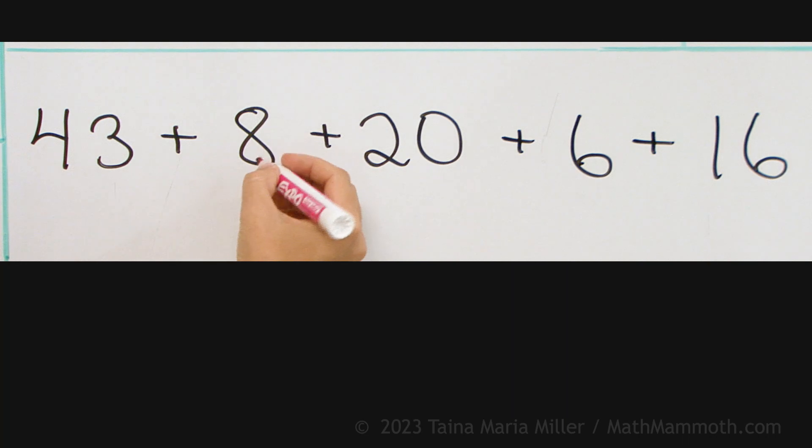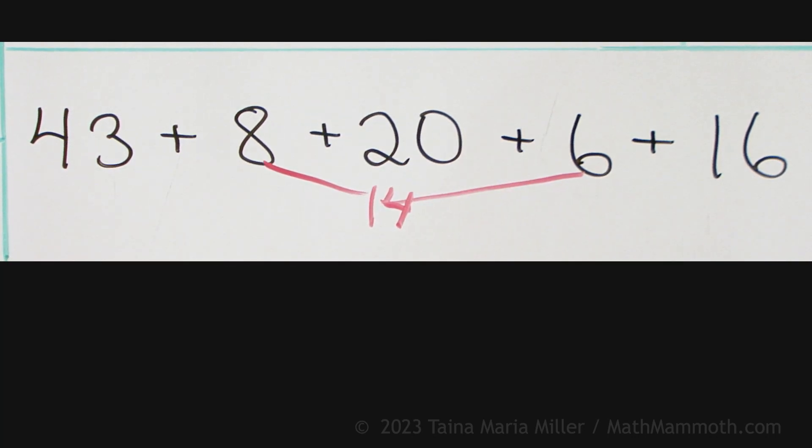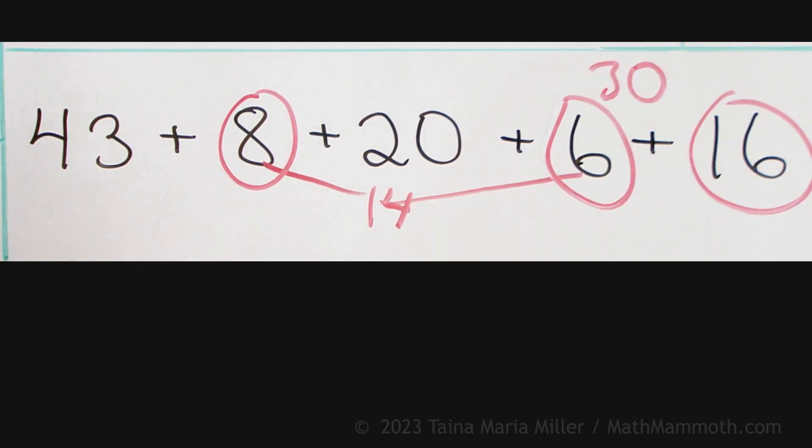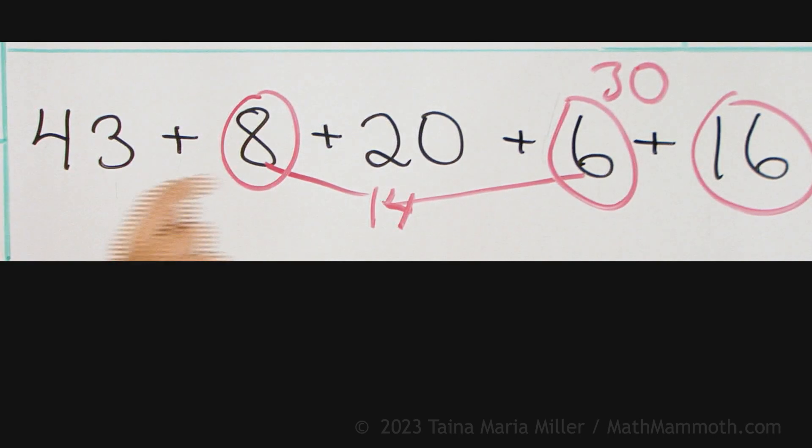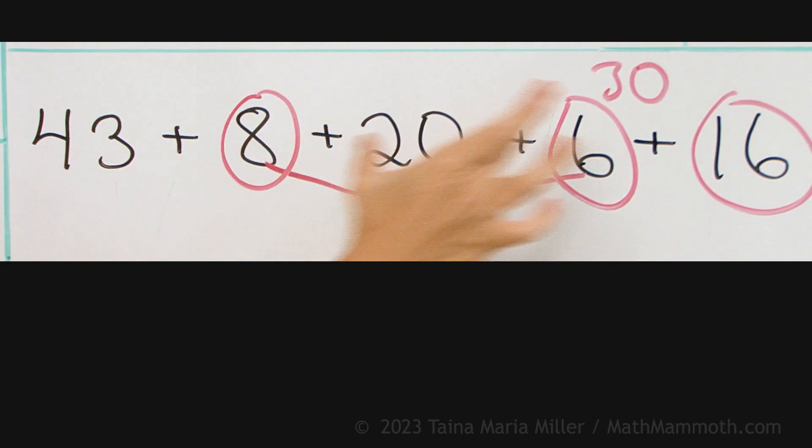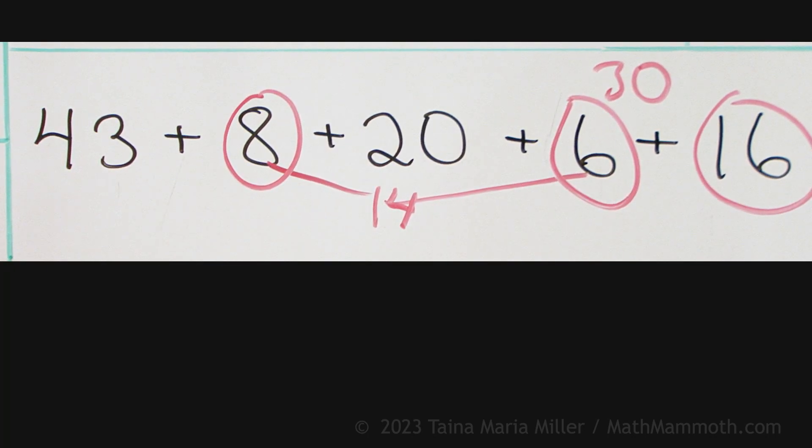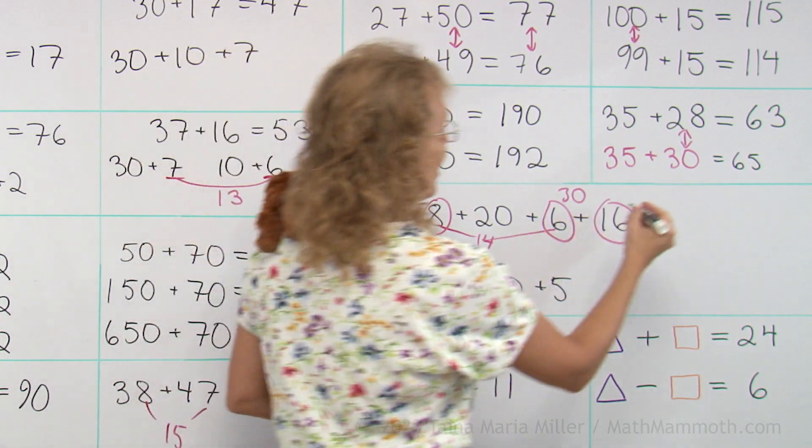So I notice here 8 and 6, okay, those make 14. And then 14 and 16, those go together nicely because they make 30, right? So this, this and this together makes me 30. So that makes it much easier. And now 20 and 30 is 50. And then I have just 50 and 43. So that is 93.